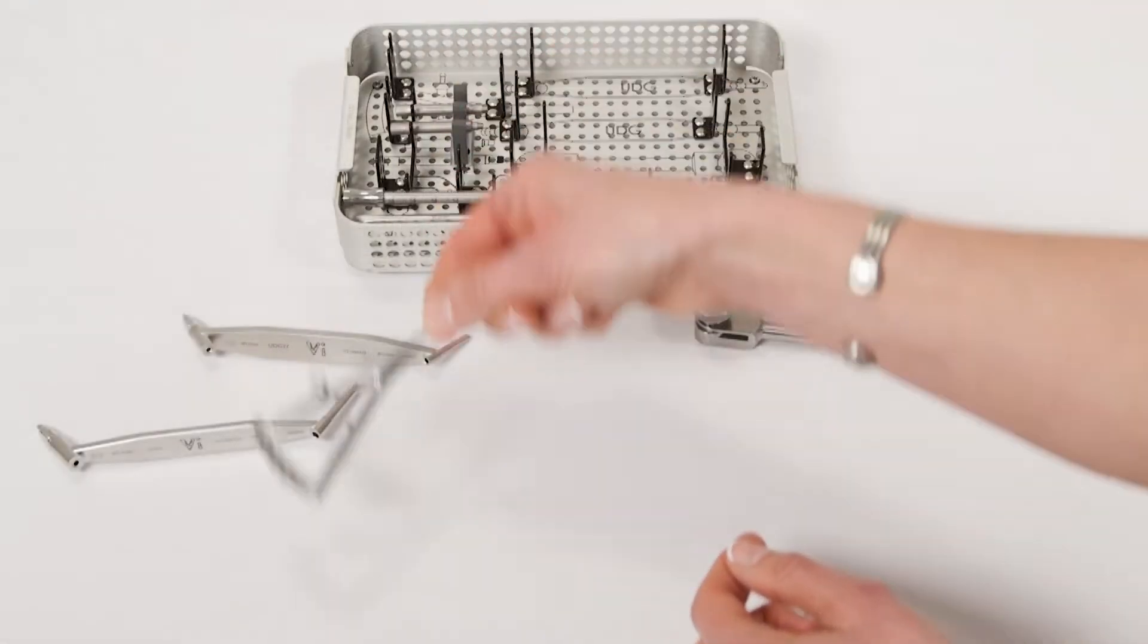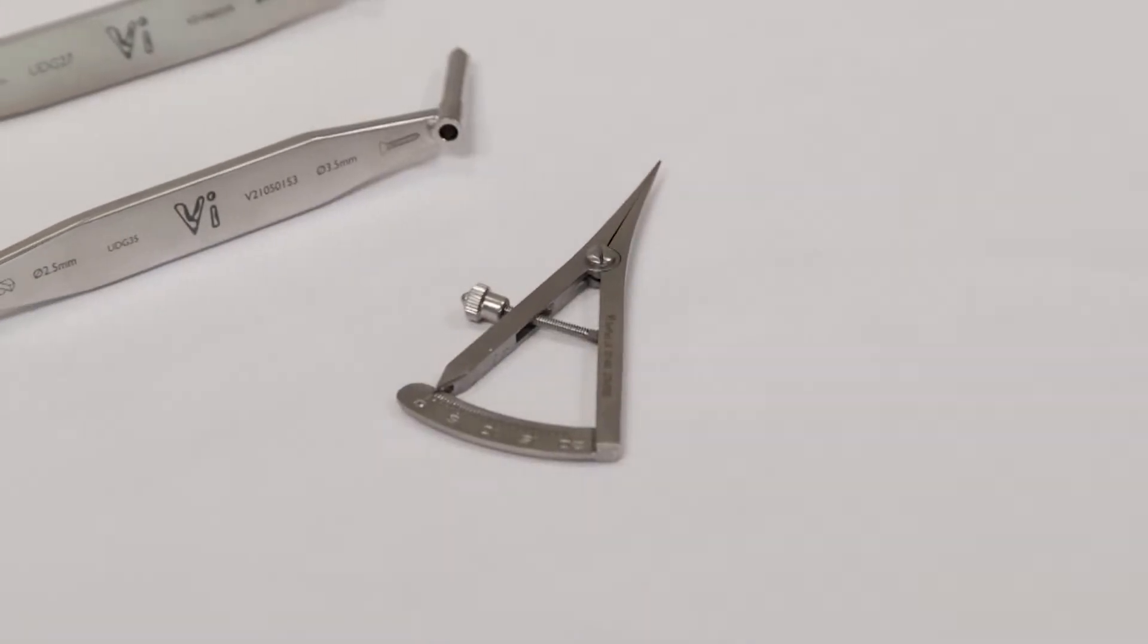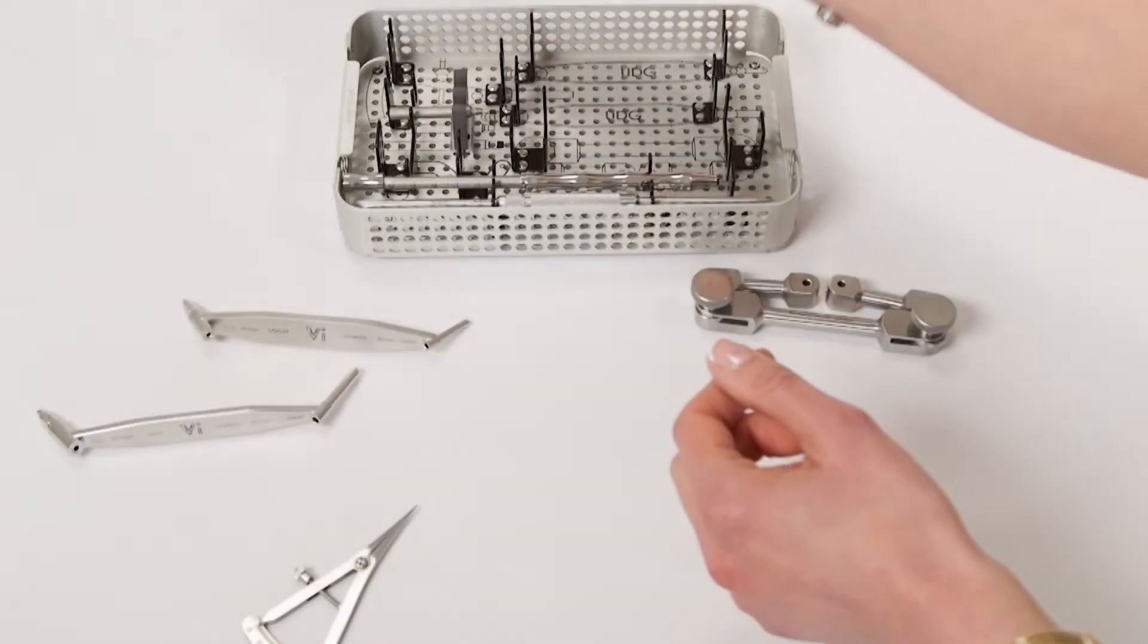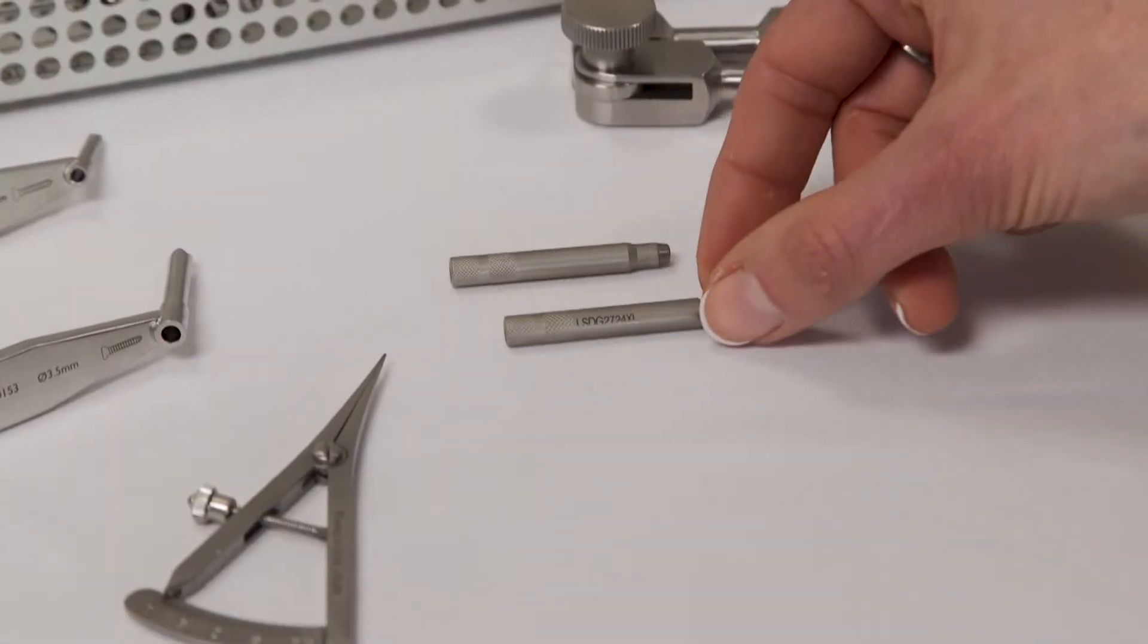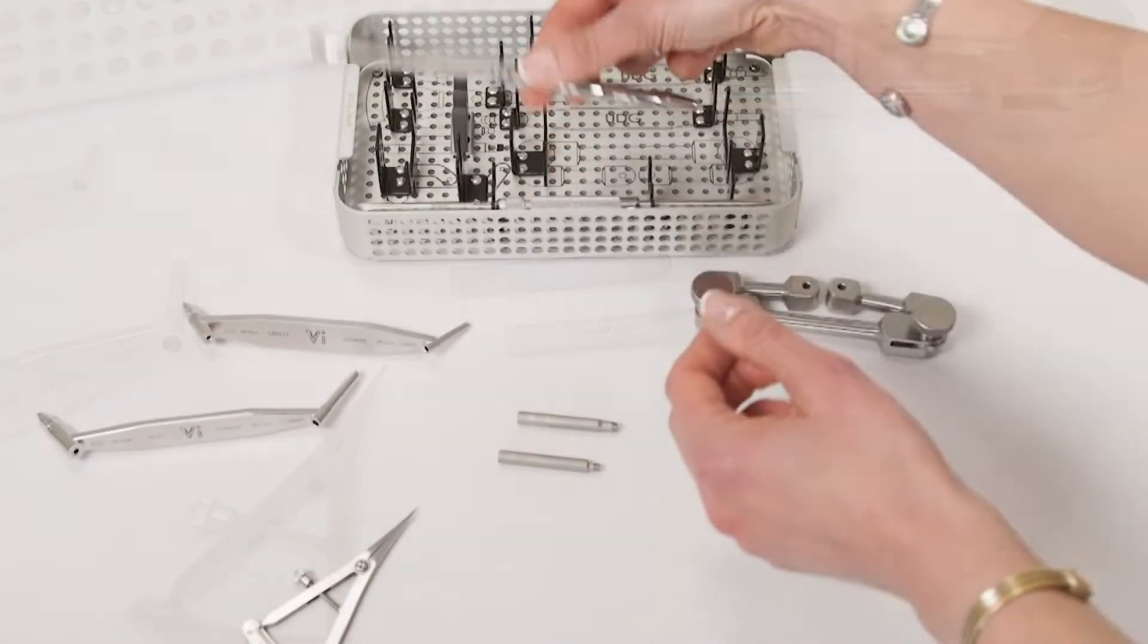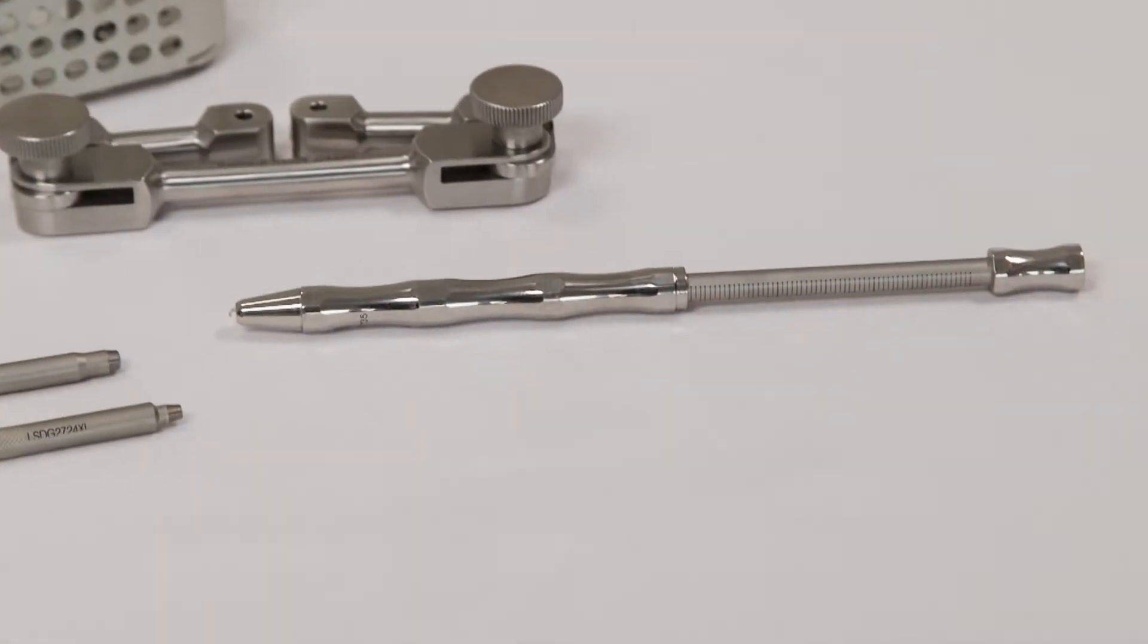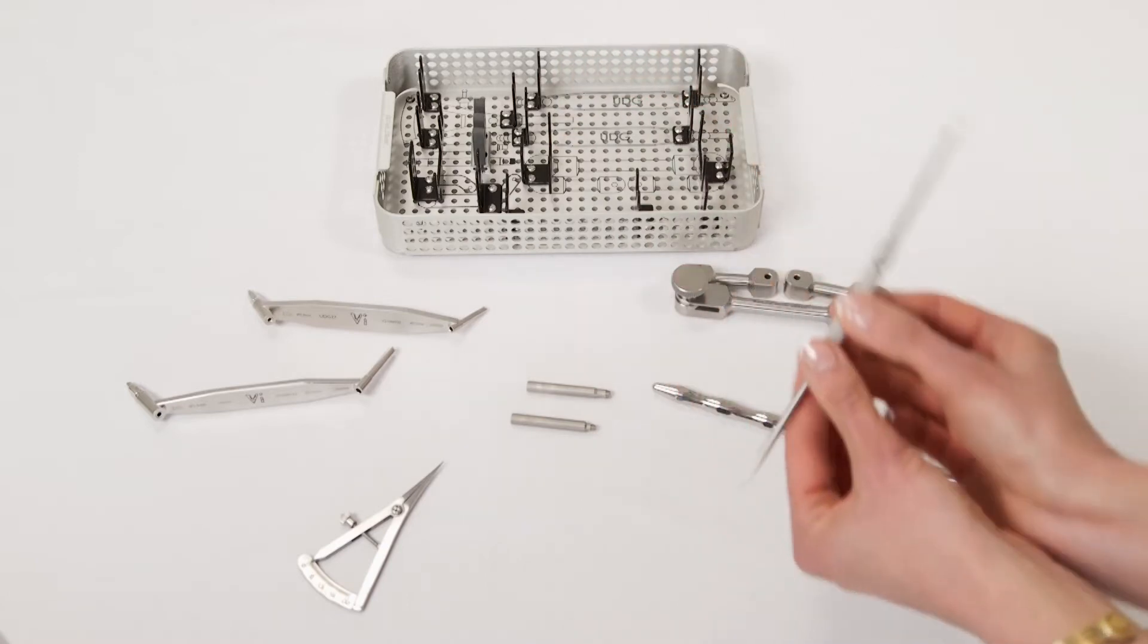Additional instruments include a TPLO Rotational Gauge Divider, Locking Screw Drill Guides in both sizes, a Depth Gauge, and a Bone Scribe.